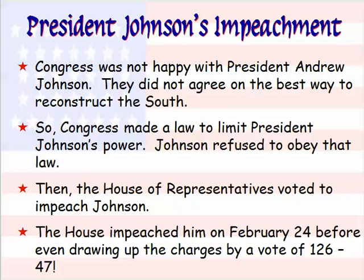President Johnson was not popular with Congress. They had different viewpoints on how to fix and reconstruct the country. Congress decided to make a law to limit Johnson's power, and Johnson refused to obey it. In retaliation, the House of Representatives voted to impeach Johnson — essentially to fire him. The House impeached him on February 24th with a vote of 126 to 47, an overwhelming majority. The vote then went on to the Senate, where a two-thirds majority would be needed to remove him.